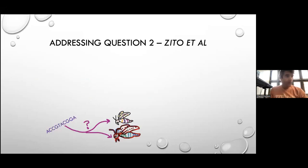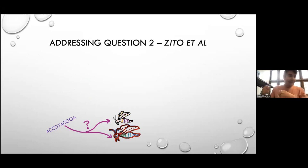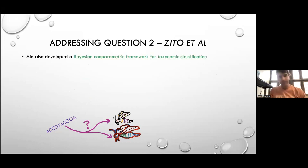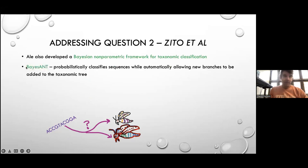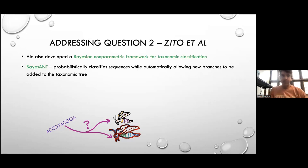For question two, what Ali was doing was: we have this reference label taxonomy, and we want to allocate species as appropriate but add branches as needed. We developed a Bayesian nonparametric framework for taxonomic classification — Ali calls it BayesANT. It probabilistically classifies sequences, automatically creating new branches to be added to the tree while including uncertainty in that decision — for example outputting a 50% chance that this is a new species, new family, or new genus. The paper has just been submitted and is available on arXiv.